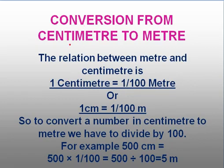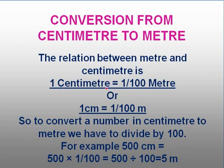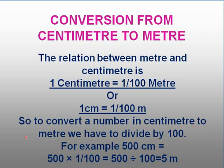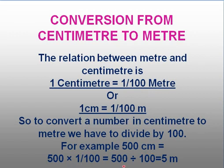Now, conversion from centimeter to meter. Here you have to convert centimeter, the smaller unit of length, to the bigger one, which is meter. See what is the relation between these two: 1 centimeter is equal to 1 by 100th of a meter, because meter is the bigger unit. So, to convert a number in centimeters to meters, we have to divide by 100. For example, 500 centimeters is 500 into 1 by 100, that is 500 divided by 100, which is equal to 5 meters.